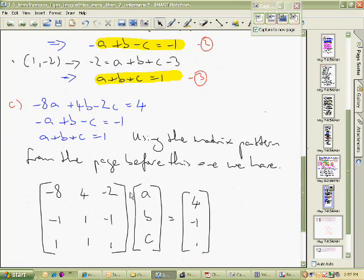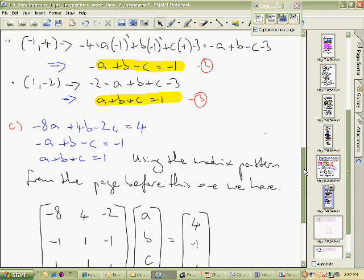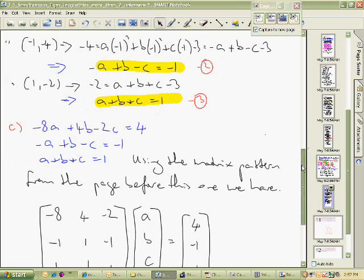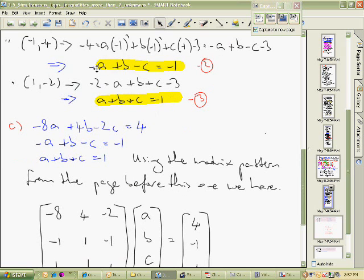This row represents this equation here. The next one is -1A - it's -1 because it's -1A, +1B, and -1C. So -1A + B - C = -1, and there it is. That row represents this equation.